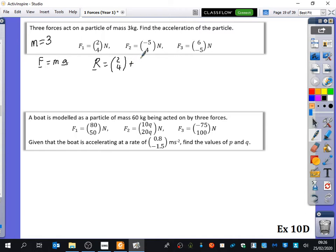which is (2, 4) plus (-5, 4) plus (6, -5), which looks like that's (8, -5), which is (3), and (8, -5), which is (3). I hope I've done that right. Yep. So the resultant force is (3, 3). So now we can say, using this,